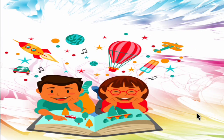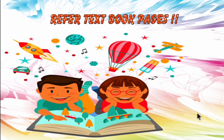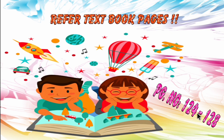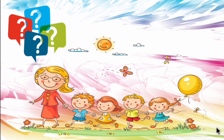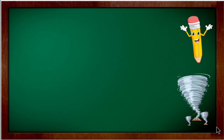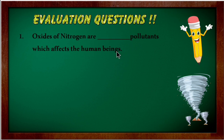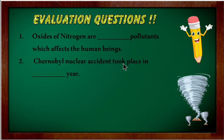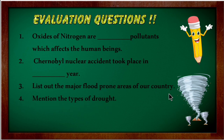Today's session on Geography 5th Unit — Hazards — is completed, covering textbook pages 124 to 128. Evaluation questions include: What kind of pollutant are oxides of nitrogen? In which year did the Chernobyl nuclear accident take place? List the major flood-prone areas of India. Mention the types of drought. Why should we not construct houses in foothill areas?